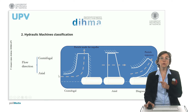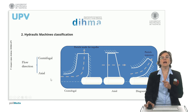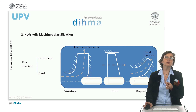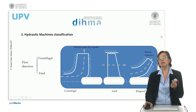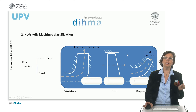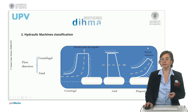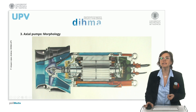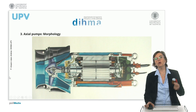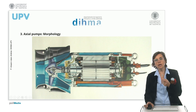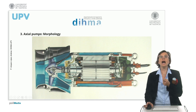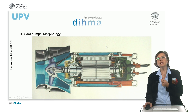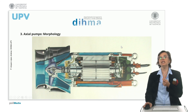If not axial, we have centrifugal pumps where the exit angle is 90 degrees, or diagonal pumps where the angle is somewhere between 90 and 180 degrees. The morphology of axial pumps means the main impeller makes it possible for flow to enter the machine along the axis and exit in the same direction as the impeller.